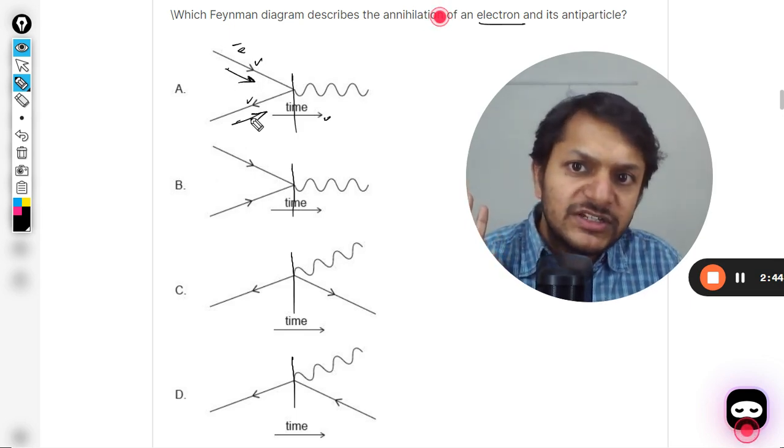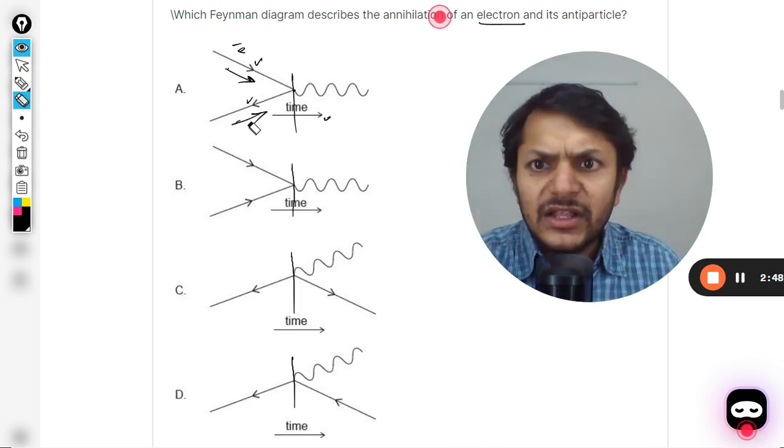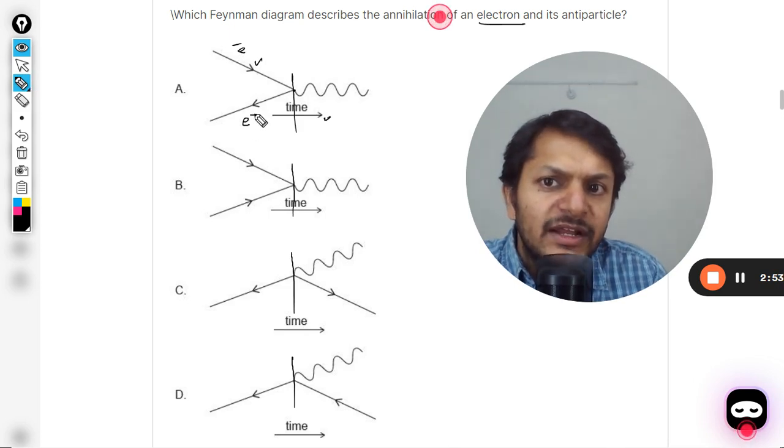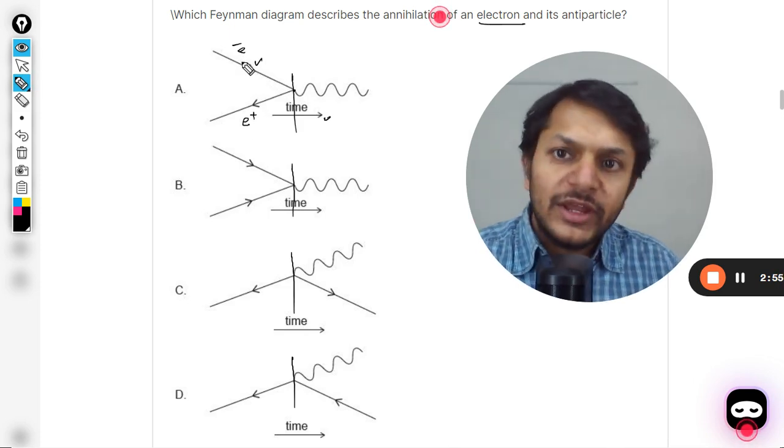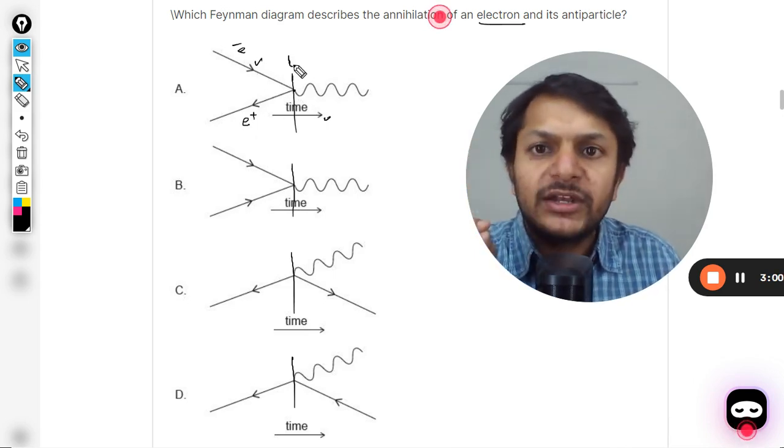Otherwise the direction is still this. So an electron is coming downward, this is going this way, and they are colliding at some point. There is no problem with the direction, but this direction shows that it is an antiparticle. It means it has to be positron. So electron and positron are coming together and they are colliding at one point, I'm calling it t.